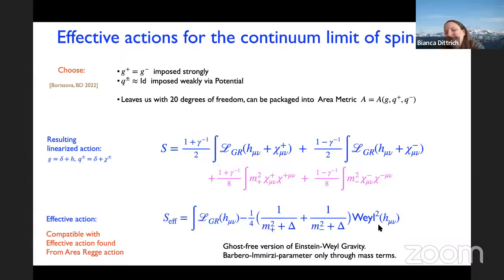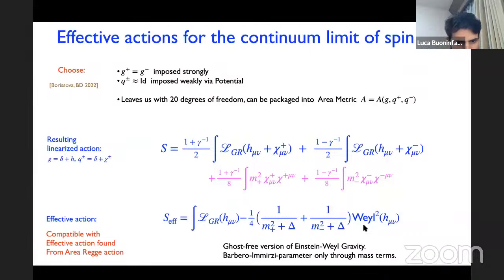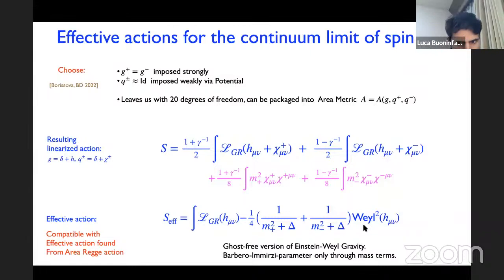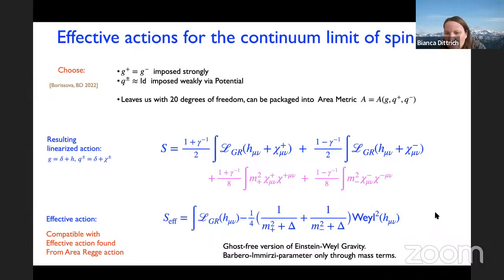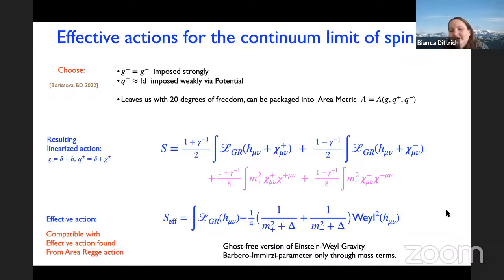Answer: If you look at the dispersion relation, it's ghost-free — there's no negative sign. What happens is instead of k-squared going to k-to-the-four and then the dispersion relation going negative again, it changes into approaching a maximum momentum — there's a maximum value. It looks like a curve that goes up and then plateaus. So it's ghost-free, at least in this linearization — that's what we checked. Of course the question is to extend that to non-linear order, which would require more calculations.